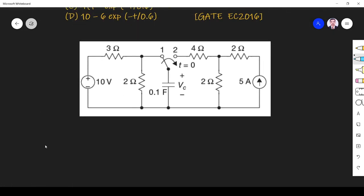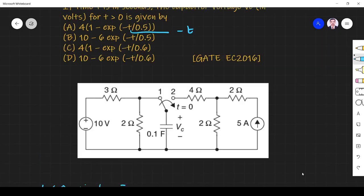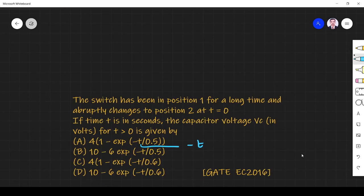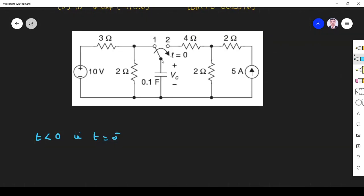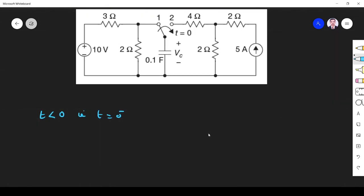First we see when t is less than 0, that is at t equals 0 minus. The switch goes to position 2 only at t equals 0. So when t is less than 0, the circuit, the switch is in position 1. So the circuit looks like this.